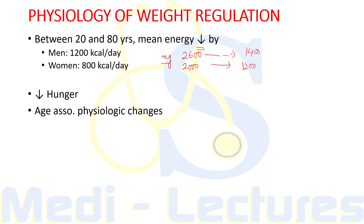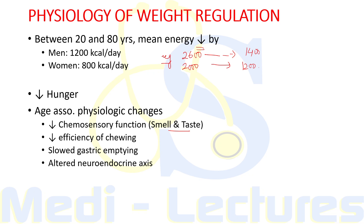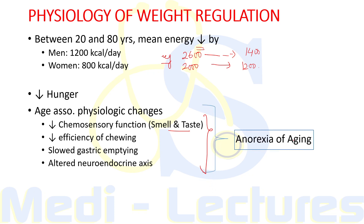Several age-associated physiologic changes also predispose elderly persons to weight loss, such as decreased chemosensory function like smell and taste of food, decreased efficiency of chewing, slowed gastric emptying, and altered neuroendocrine function which includes changes in hormones like leptin, cholecystokinin, neuropeptide Y, etc. All these changes are associated with early satiety and decreased appetite, and this is known as anorexia of aging.